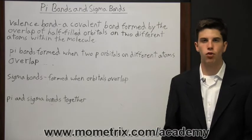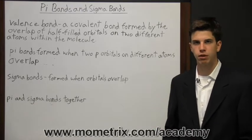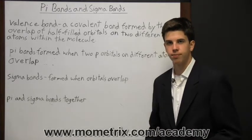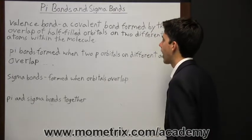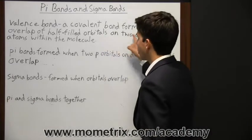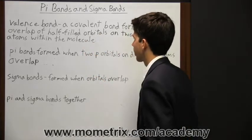In VSEPR theory, both pi bonds and sigma bonds are valence bonds. Now, a valence bond is a covalent bond formed by the overlap of half-filled orbitals on two different atoms within the molecule.